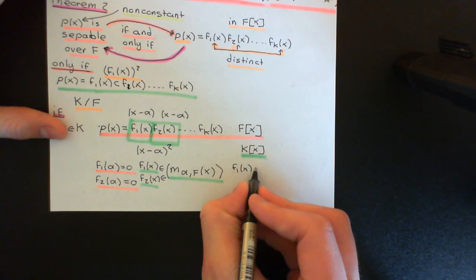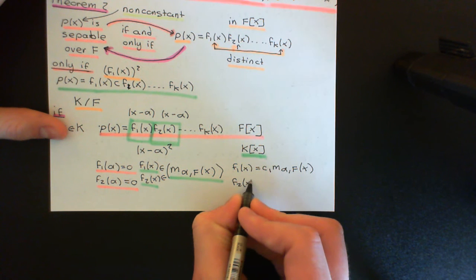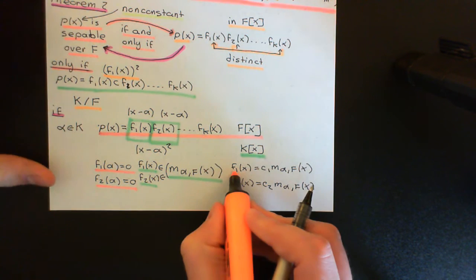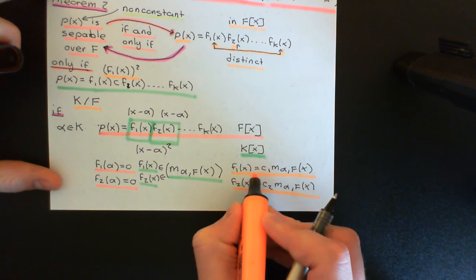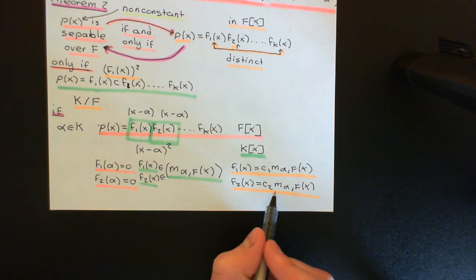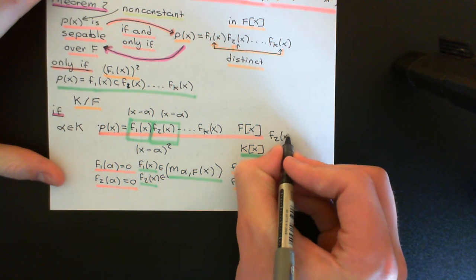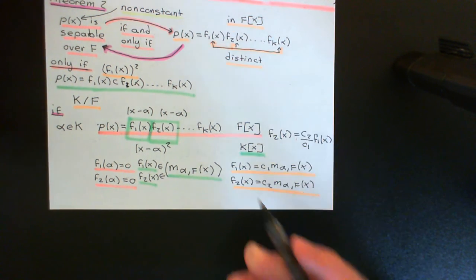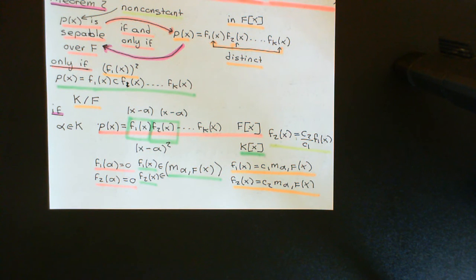So we can write F₁(X) = c₁ · m_{alpha}(X) and F₂(X) = c₂ · m_{alpha}(X), where c₁ and c₂ are constant polynomials. Rearranging, we get F₂(X) = (c₂/c₁) · F₁(X), and since c₂/c₁ is a unit, the two polynomials are clearly associates of one another — contradicting the assumption of a distinct irreducible factorisation.